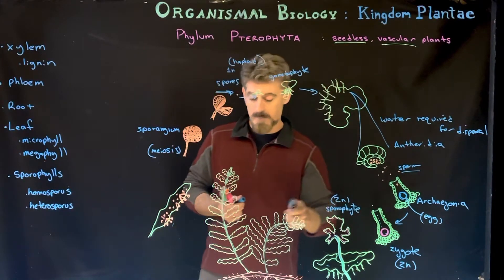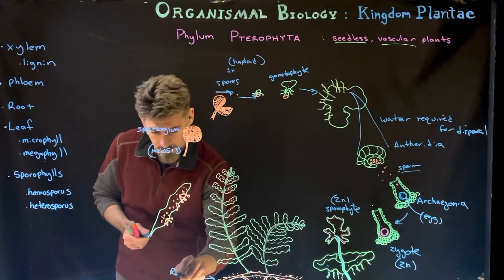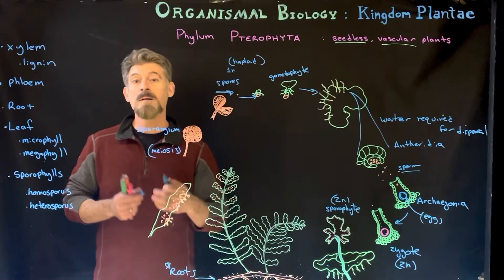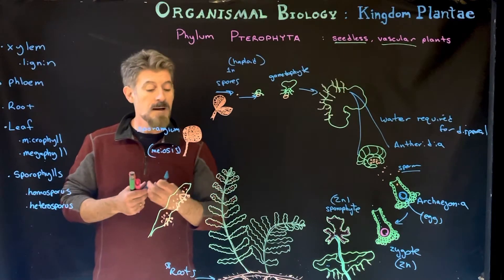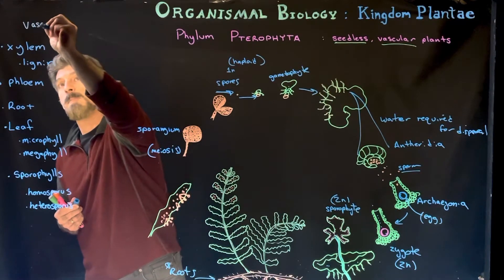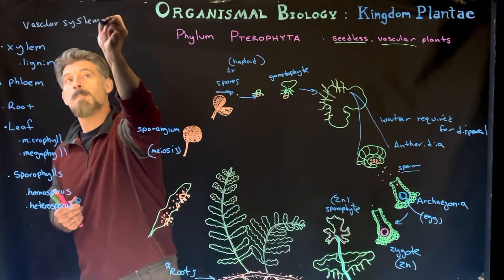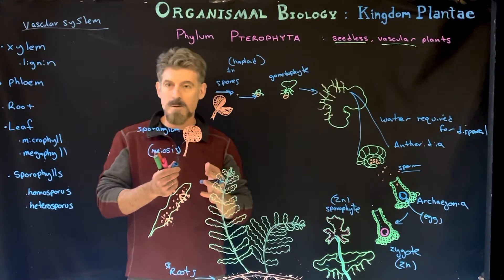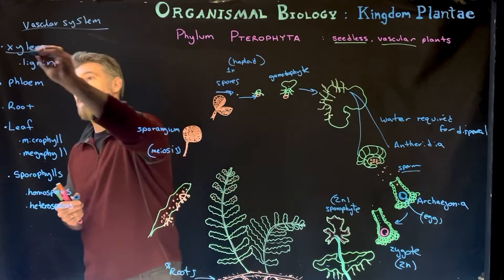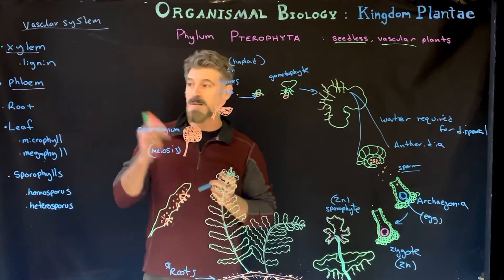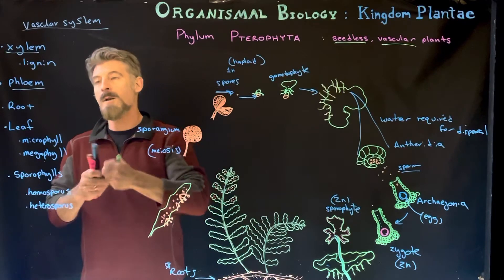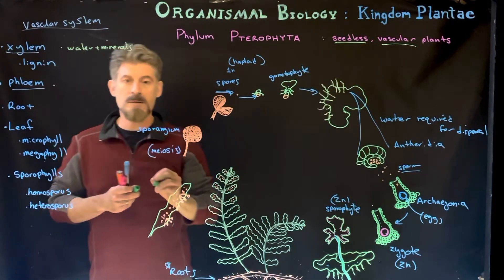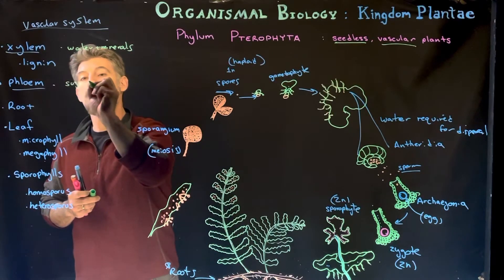When the sporophyte plant grows, it's going to differentiate. The bryophyte had rhizoids, but now we have actual roots. Roots are going to have true tissues in them, and those tissues are going to contain different types of cells that are part of what we call the vascular system. The vascular system will be covered in more detail separately, but we're going to have two main types of tissue: the xylem and the phloem. The xylem transports mostly water and minerals, whereas the phloem transports more sugars and nutrients.